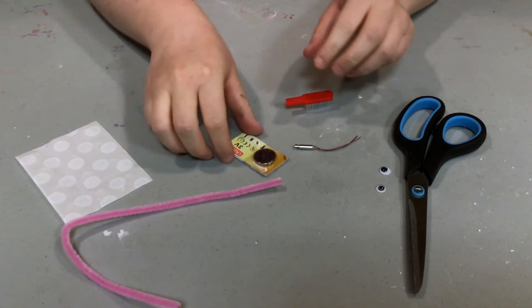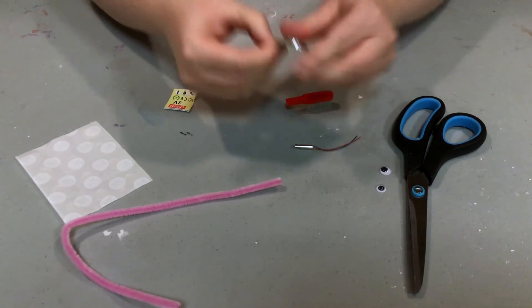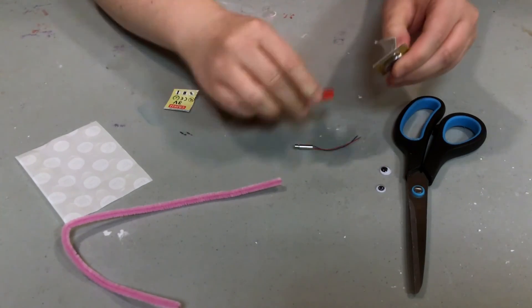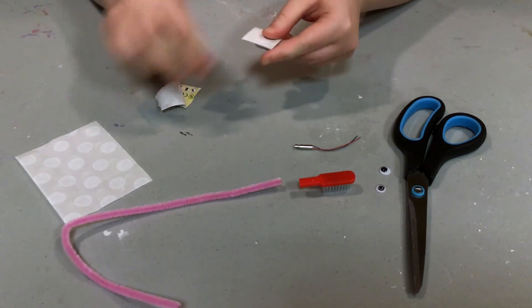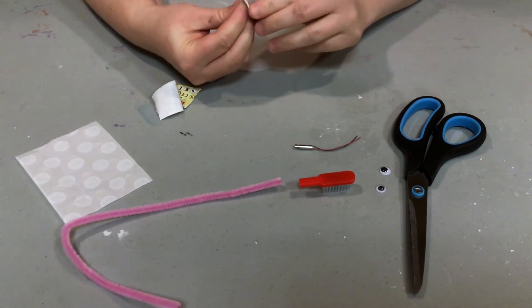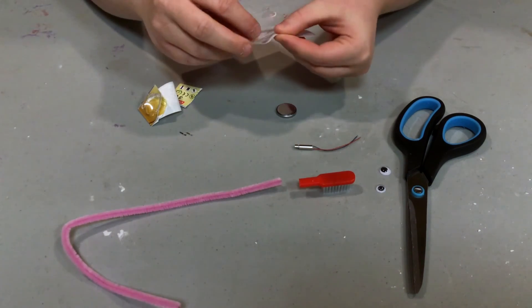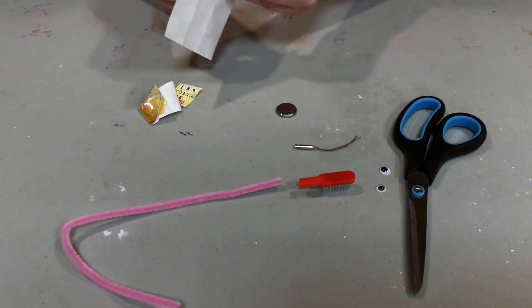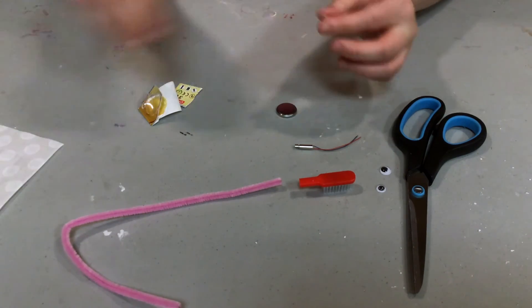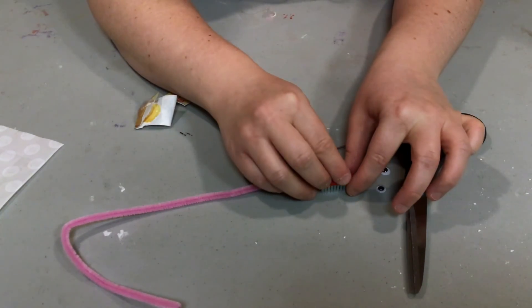We're going to take that. We're going to open up our small battery out of the package. And this is where our glue dots are going to come in. So, you're going to take a glue dot at the front of your toothbrush.